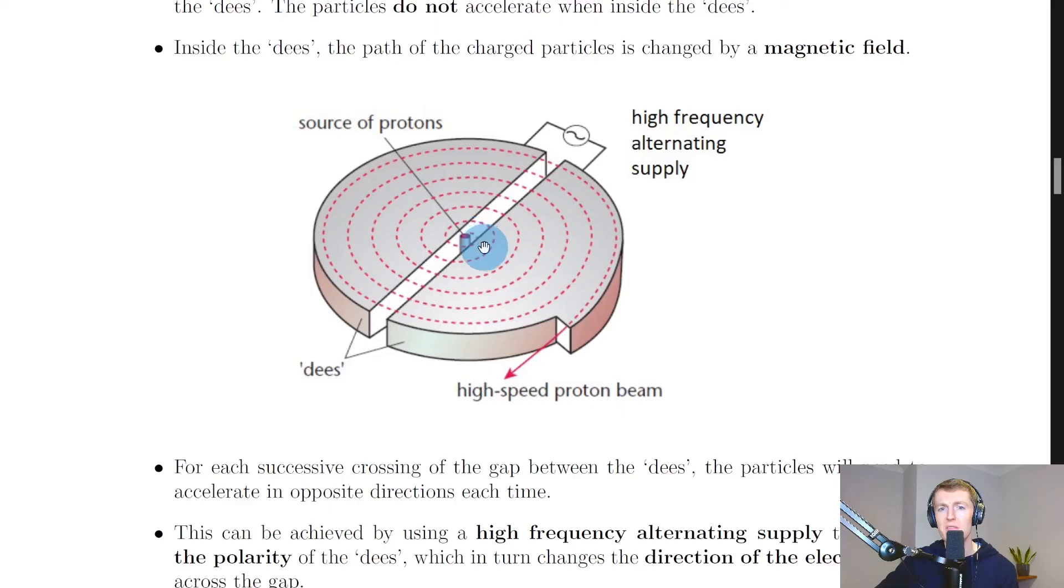But then once they've reached this plate and have changed direction due to the magnetic field, then the polarity of the charge in the dees is going to change due to the high frequency alternating supply. So this dee will then become positively charged to repel the protons away and this dee will become negatively charged to attract the protons.